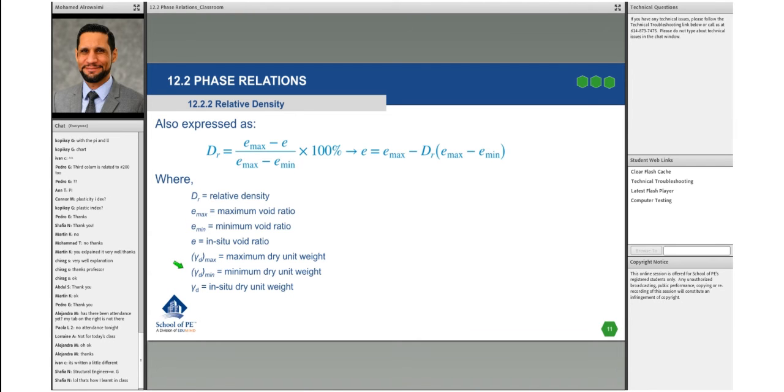You're given this and this and you just plug in. In other questions, they might give you e minimum - the void ratio, the minimum void ratio, maximum void ratio, in-situ void ratio - and ask for relative density, then use this. Or the other way around, they'll ask for the in-situ void ratio by giving you the relative density and the lab test results for e min and e max, and then you can compute that.